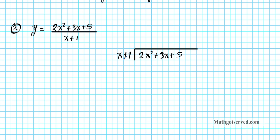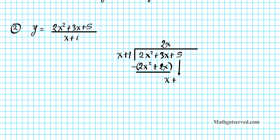Let's look at the leading terms for both the dividend and the divisor. x goes into 2x squared 2x times. 2x distributes to x plus 1: 2x times x is 2x squared, and 2x times 1 is 2x. We subtract: 2x squared minus 2x squared is 0, and 3x minus 2x is x. Then we bring down the 5, giving us x plus 5.